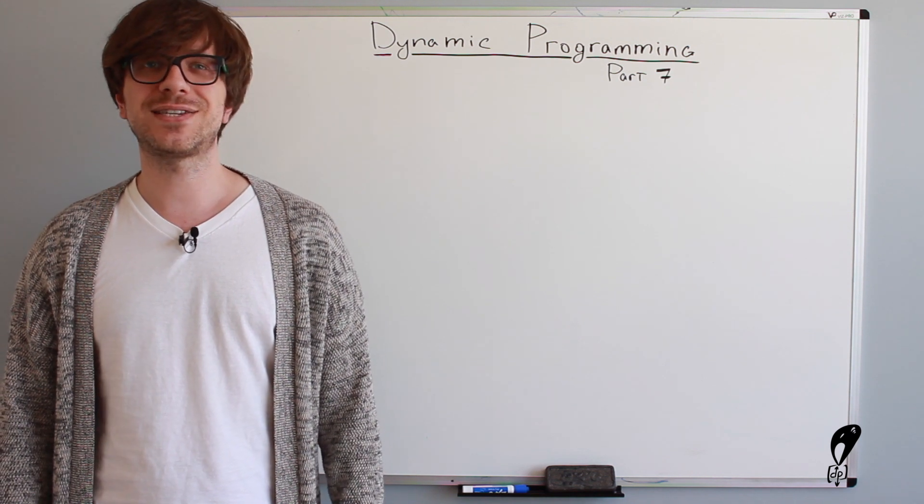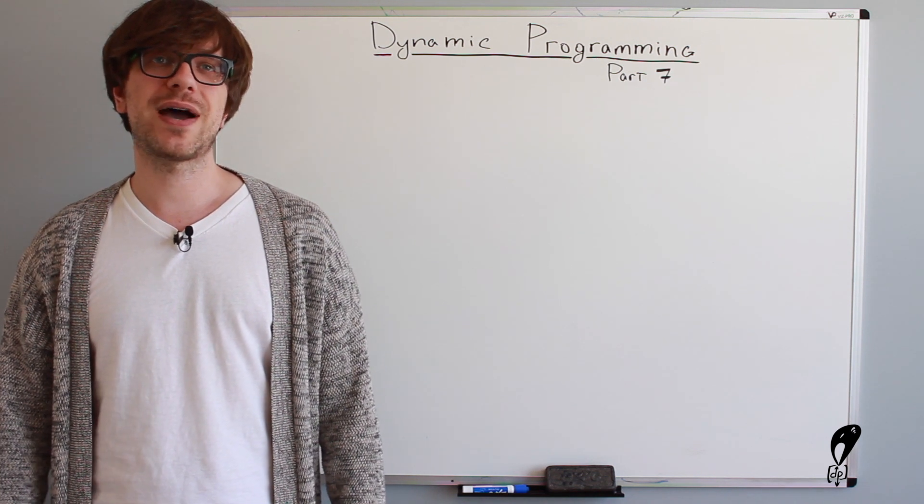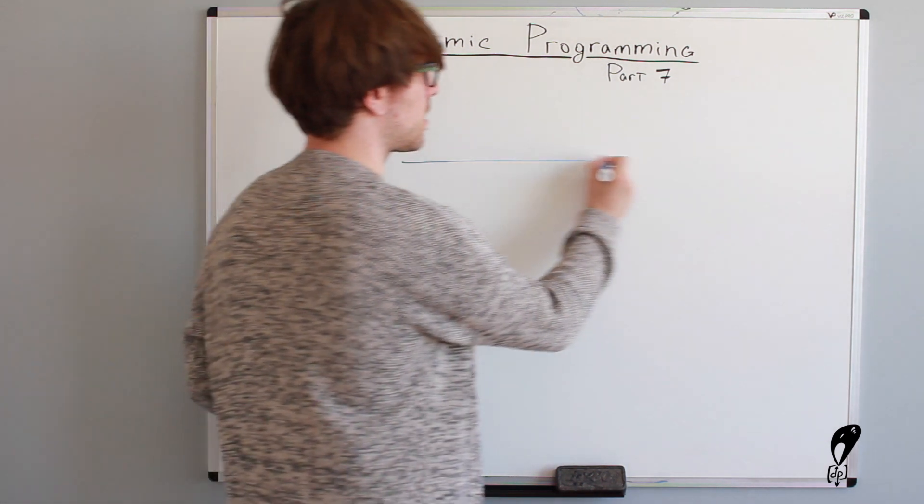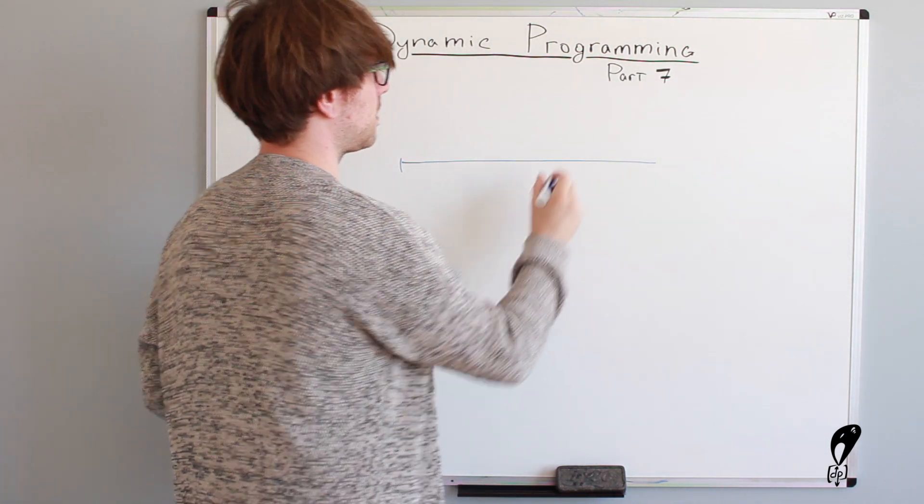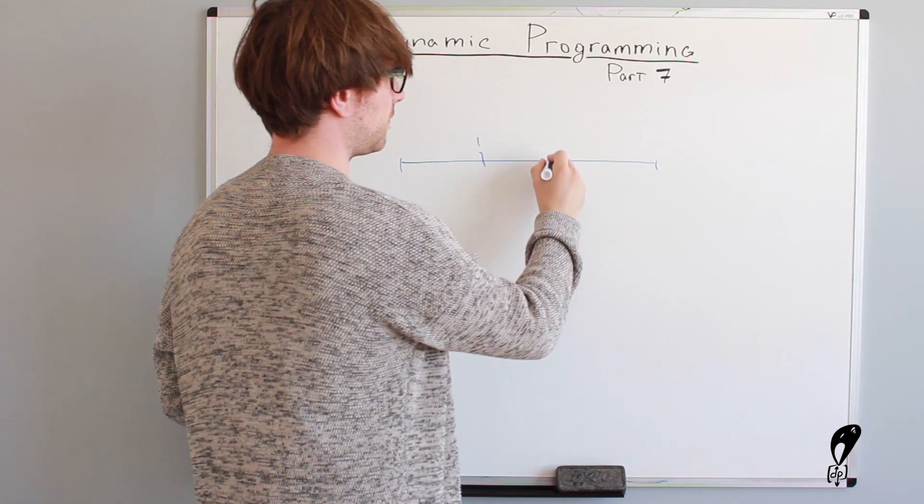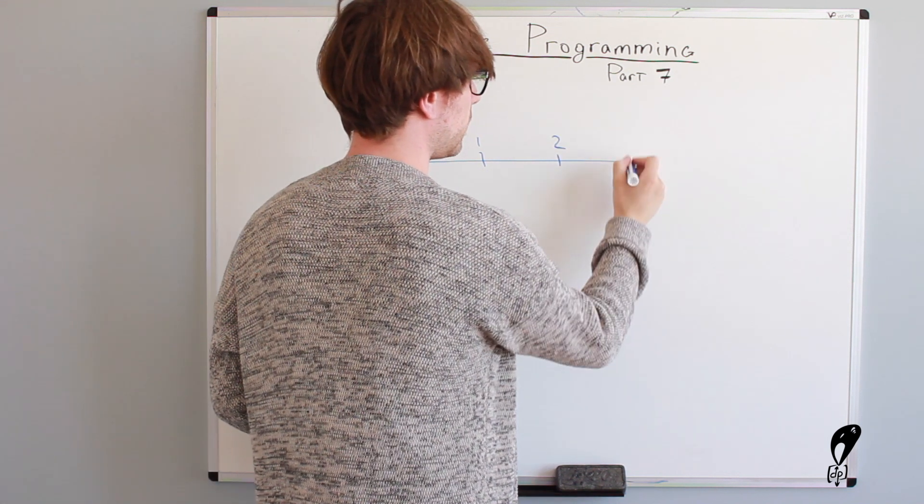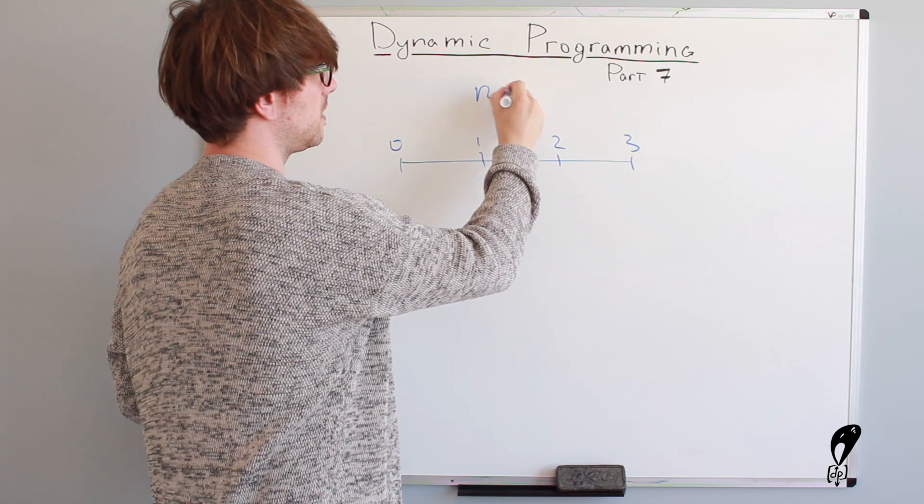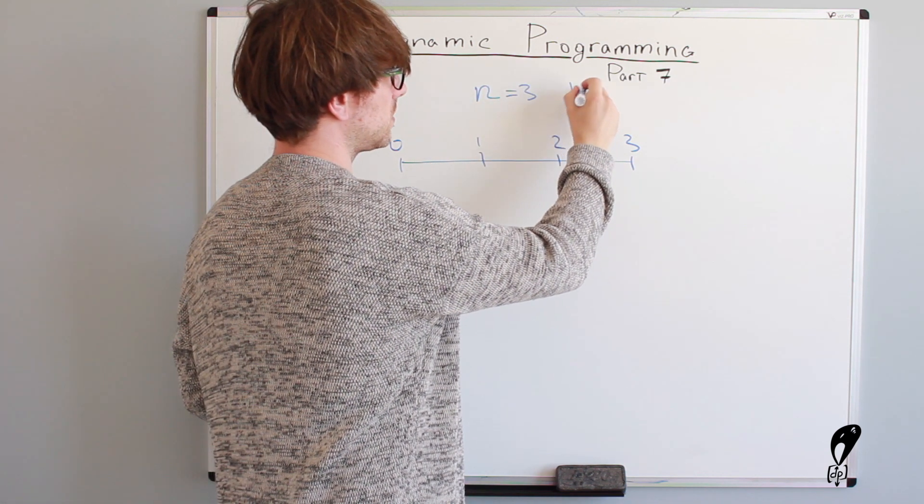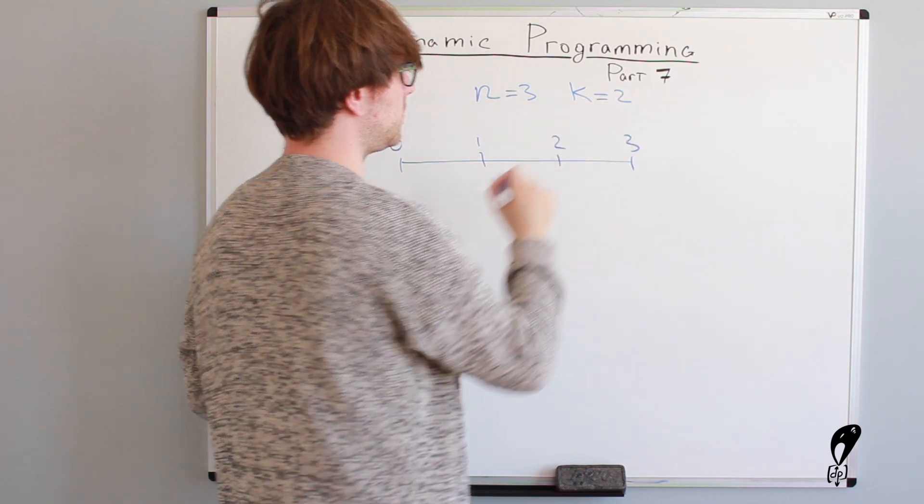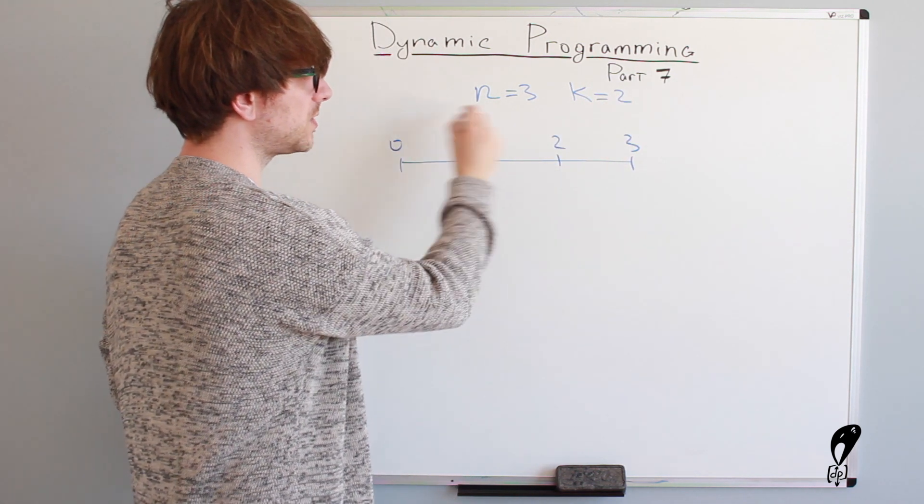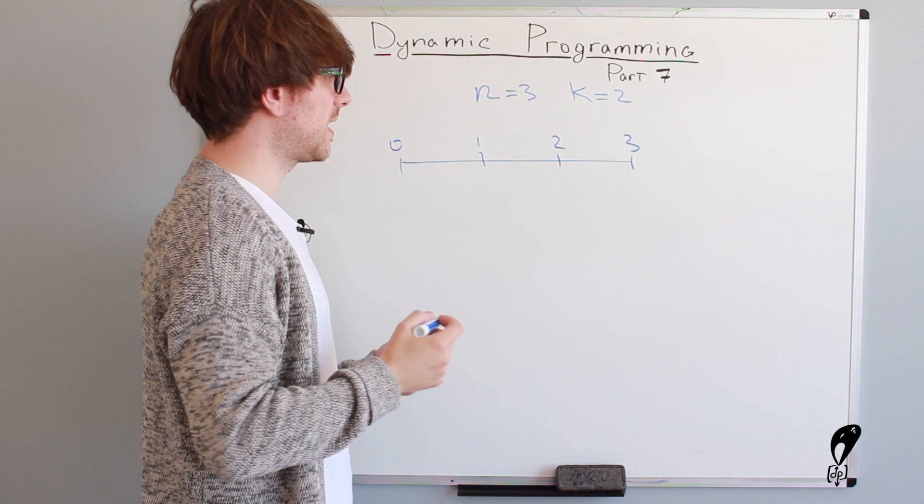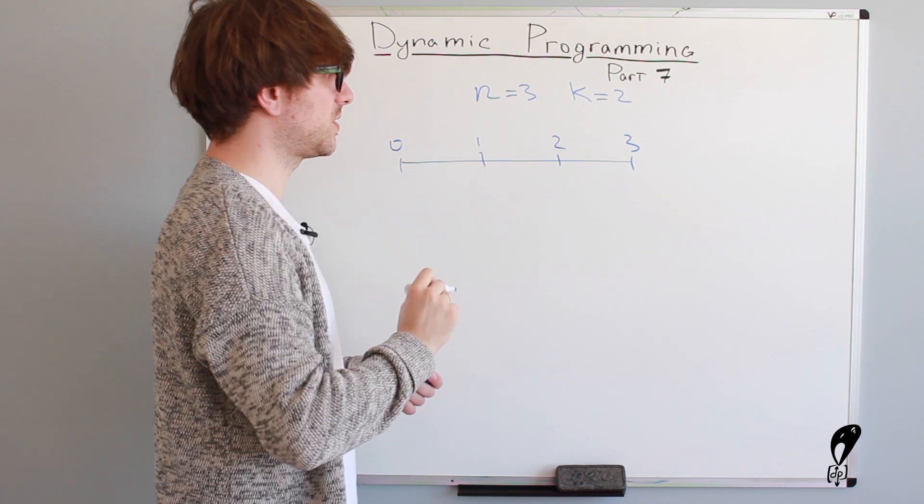So let's take a look at the paid staircase problem which is how I decided to call it. Let's try to visualize this problem. I'm going to draw the staircase of size three. Meaning that we have three steps, three stairs. So n equals to three. We also want to say k equals to two. Meaning that you can take either one or two steps at a time.